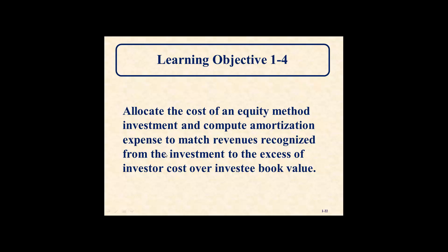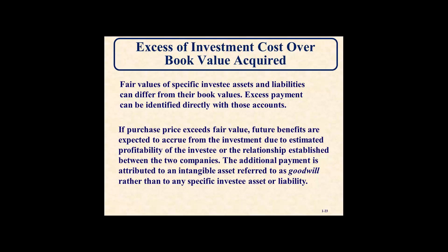Allocating the cost of an equity method investment: Fair values of specific investee assets and liabilities can differ from their book values, and excess payments can be directly identified to those fair values. For example, a building may be worth more than its book value, so when buying into that company you may pay more because the book value is less than the fair value. If the purchase price exceeds fair value, the additional payment is attributed to the intangible asset known as goodwill — any overpayment that cannot be attributed to a specific asset or liability is assigned to goodwill.